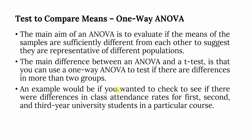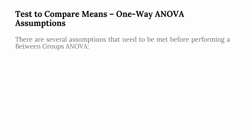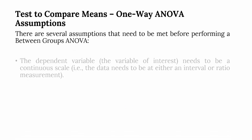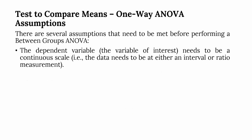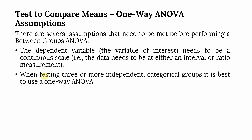An example would be checking if there are differences in class attendance for first, second, and third year university students in a particular course. The assumptions for One Way ANOVA include: the dependent variable must be a continuous variable measured on an interval or ratio scale, and you must be testing three or more independent categorical groups.